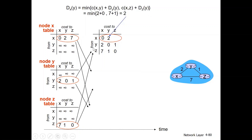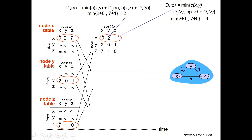Looking at x to z: via neighbor y, we calculate cxy plus dyz, which is 2 plus 1 = 3. Via neighbor z, we calculate cxz plus dzz, which is 5 plus 0 = 5. The minimum of these is 3, so the path cost dxz equals 3.